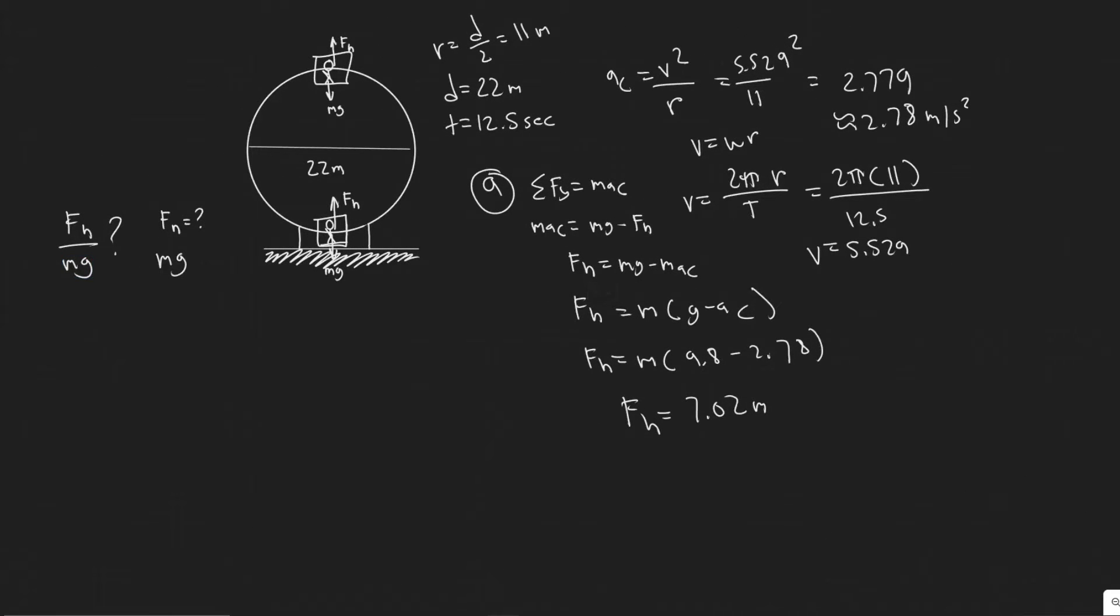And then to find the ratio, it's 7.02 M divided by M G. So M's will cancel, 7.02 divided by 9.8, you get it equals 7 point or sorry, 0.716. Yeah, so 0.716, that's going to be the ratio.